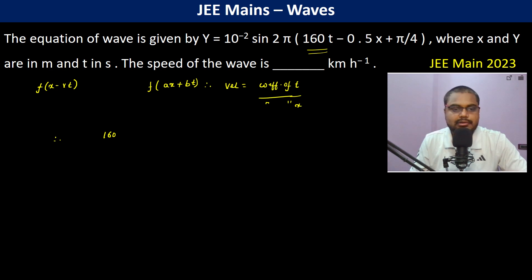And that of x is 0.5, so therefore it becomes 320 meters per second. Now it should be in kilometers per hour, so therefore 320 into...